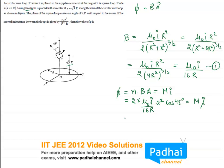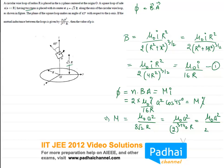So this implies that m will be equals to mu not into a square divided by 8 root 2 r. This will give us mu not a square divided by 2 raised power of 3 plus 1 by 2 into r. 3 plus 1 by 2 is what? Mu not into a square, 2 raised power of 7 by 2 into r.